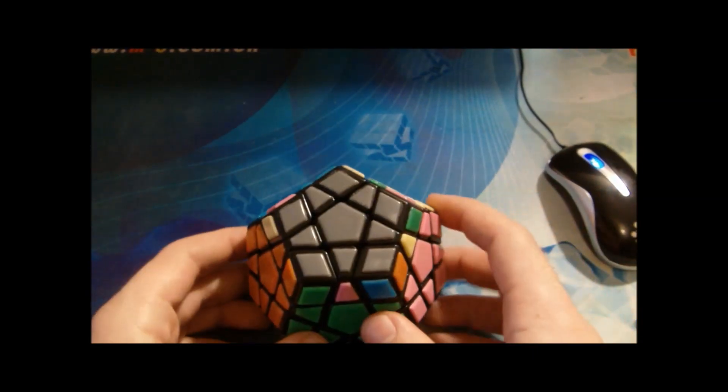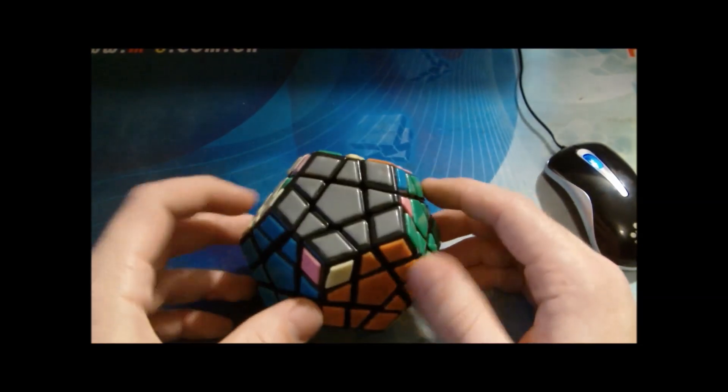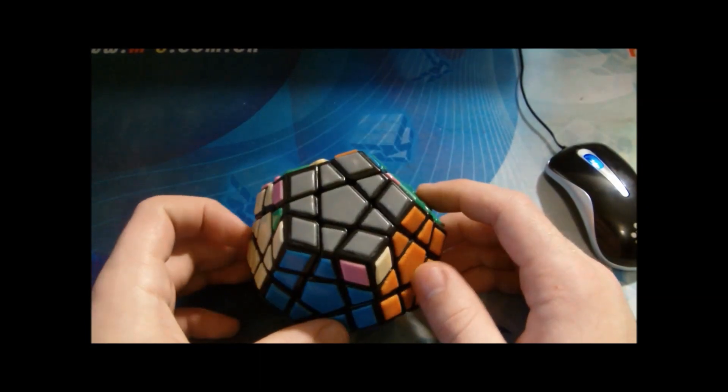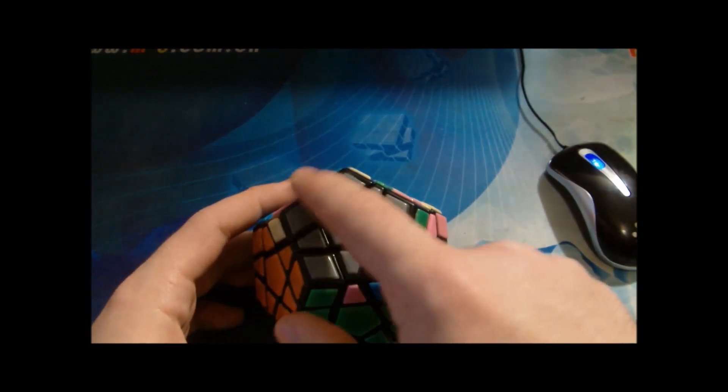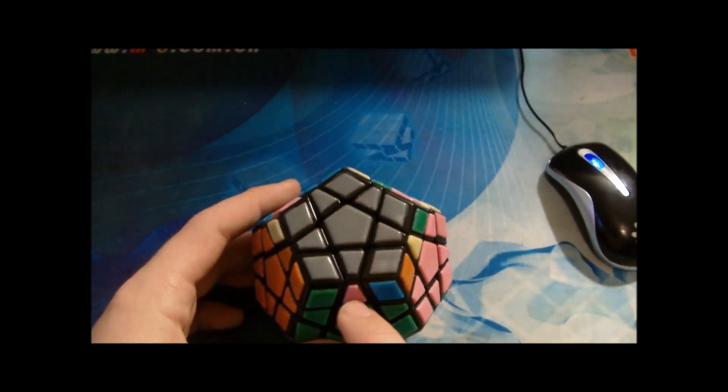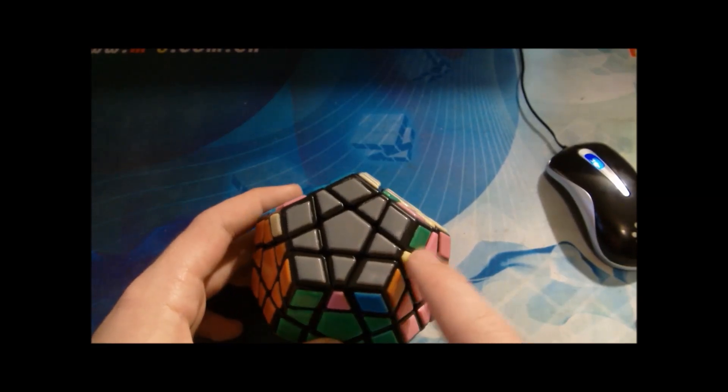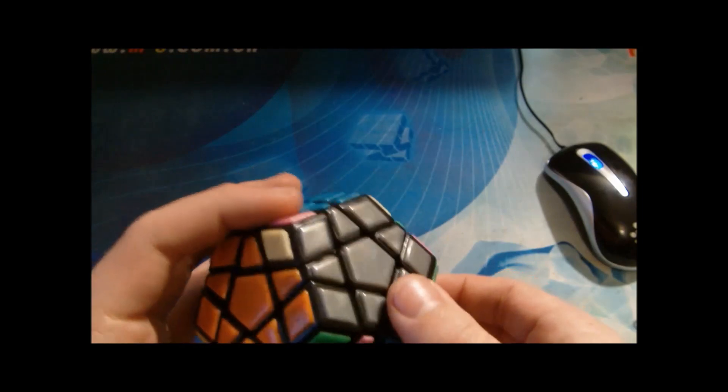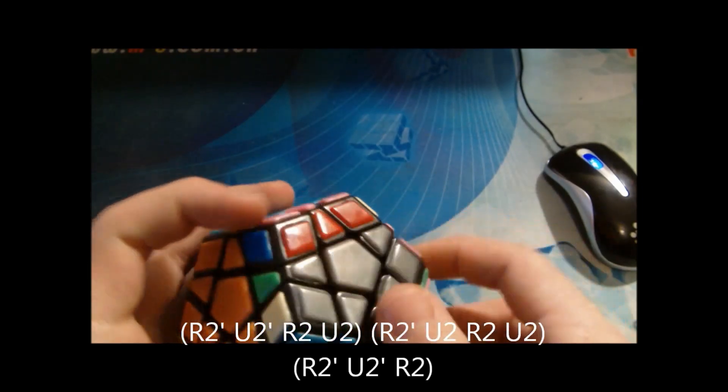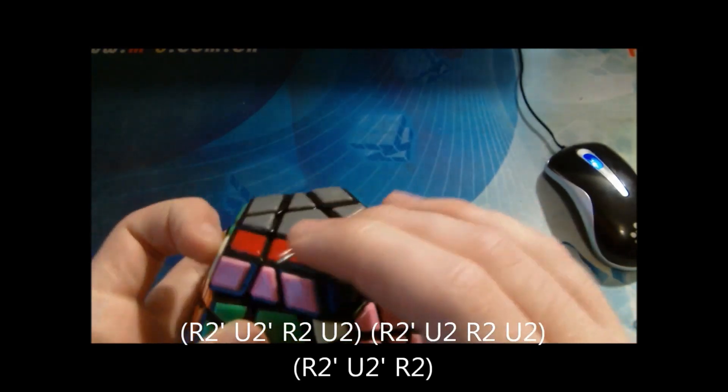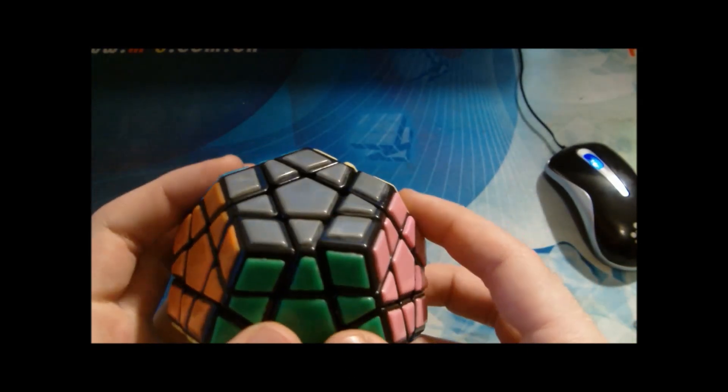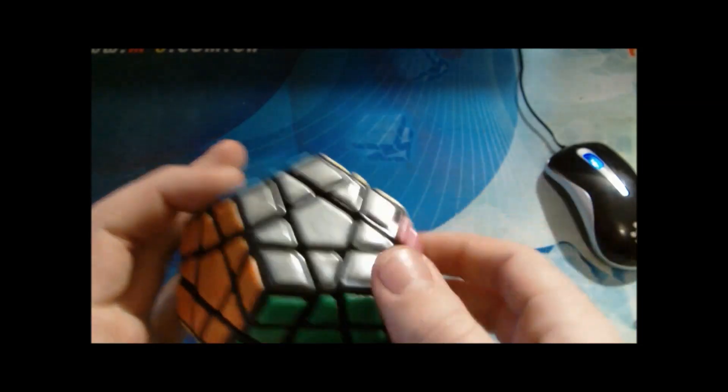Now for some free PLLs. This case kind of looks like a Y perm from this angle, so I recognize it like this. I put the bars on the left and I see where this edge goes. Since it's pink, it goes here, and I know that I have to do this alg. And then just the other direction.